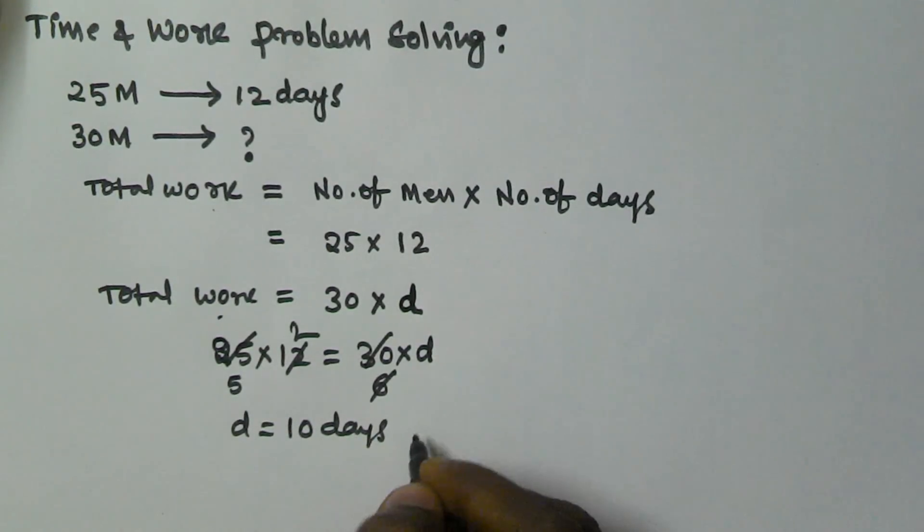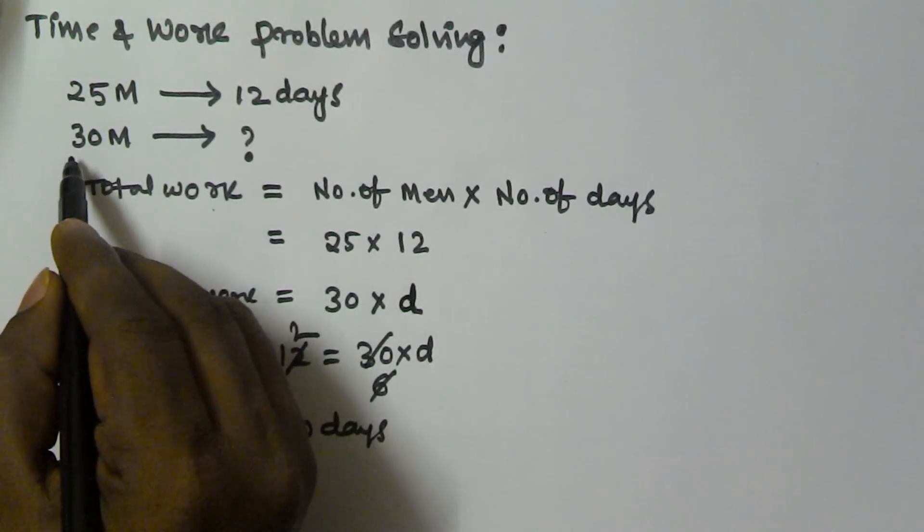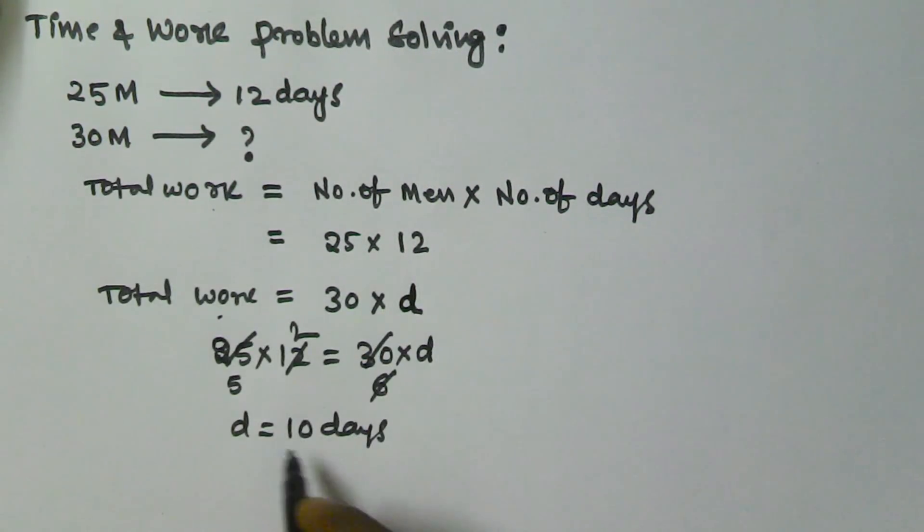D equals 10 days. If 25 men take 12 days to finish the work, then 30 men will take 10 days to finish the work.